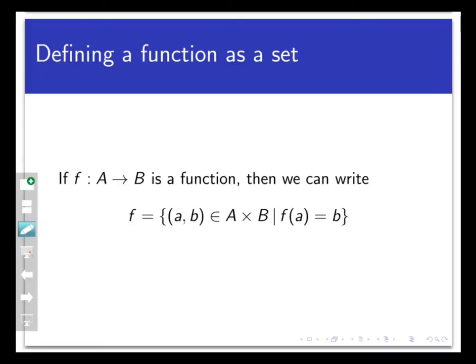Last time we saw that we can represent functions f going from A to B as sets of ordered pairs by writing f as the set of all pairs (a,b) from A cross B, such that b equals f(a). The first new idea we're going to look at here is that just as a function given as a formula or table could be represented as a list of pairs, the vice versa might also be true.